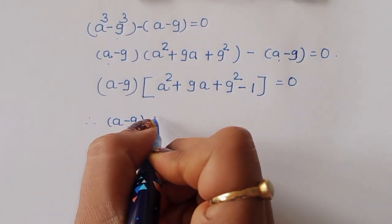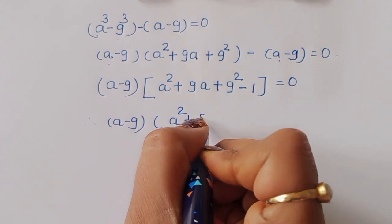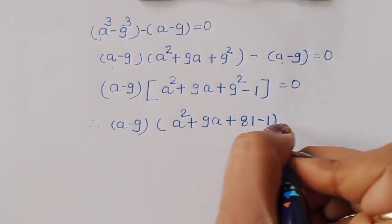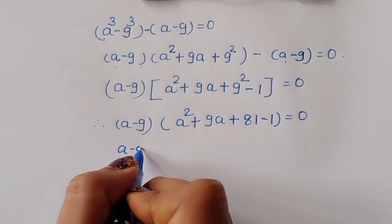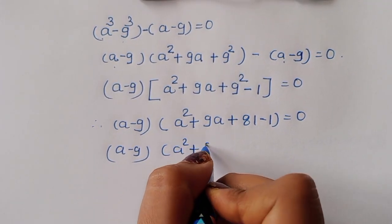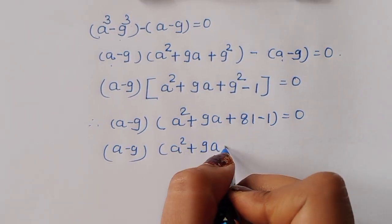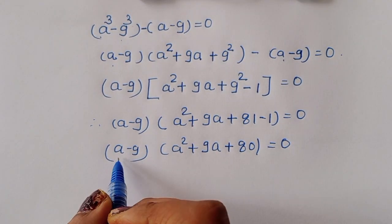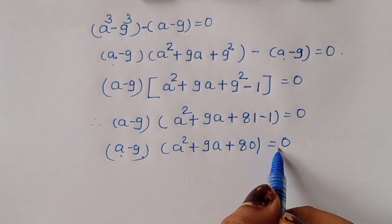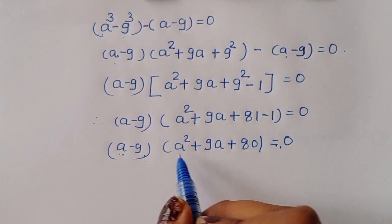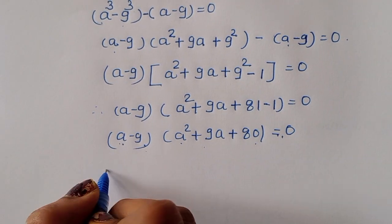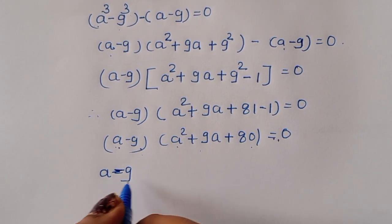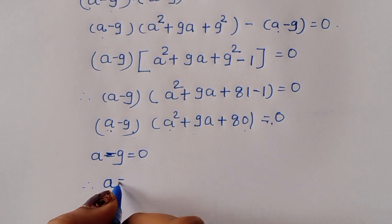Simplifying 81 minus 1 gives 80, so we have (a-9)(a²+9a+80) = 0. This gives two equations: a - 9 = 0, and a² + 9a + 80 = 0. From the first equation, a = 9.